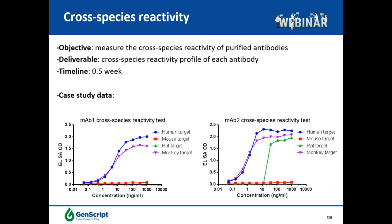Another characterization for lead selection is measuring cross-species reactivity; in most cases cross-reactive antibodies are desired for future animal studies. MAb1 and MAb2 generated against human targets were tested for cross-reactivity against human, mouse, rat, and monkey targets. MAb1 showed binding to human and monkey targets due to high homology between monkey and human, but no binding to mouse and rat targets. MAb2 showed good binding to human and monkey targets, plus lower but decent binding to rat targets, and no binding to mouse targets at all.